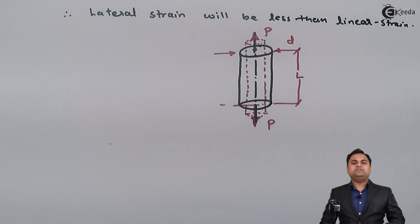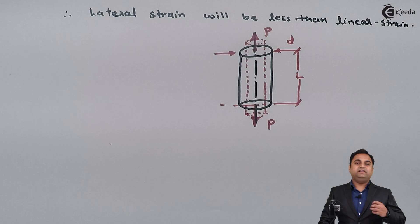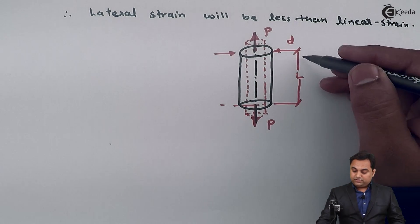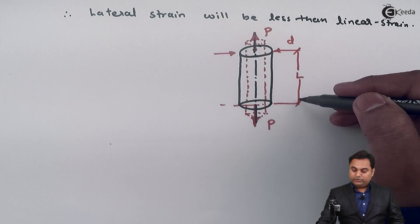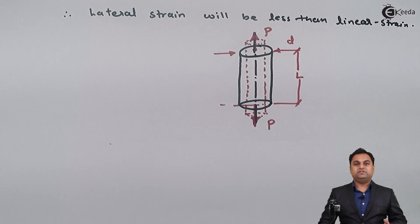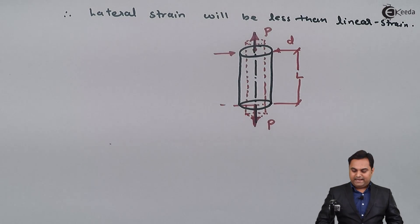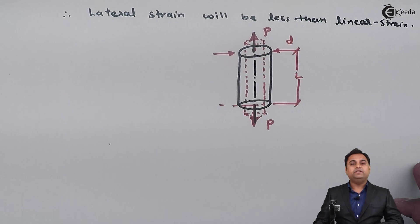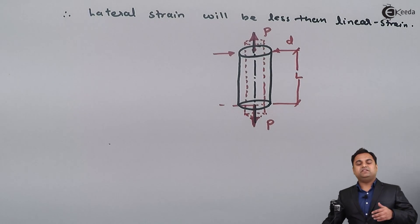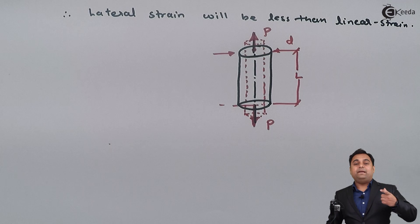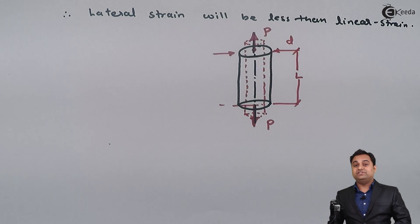This increase in length is called linear strain. Why is it called linear strain? Because the load is parallel to the length — whenever the load is parallel to length, that becomes linear strain. And lateral strain is perpendicular to linear strain. Along the length, the length goes on increasing but diameter decreases, so length and diameter are perpendicular to each other.